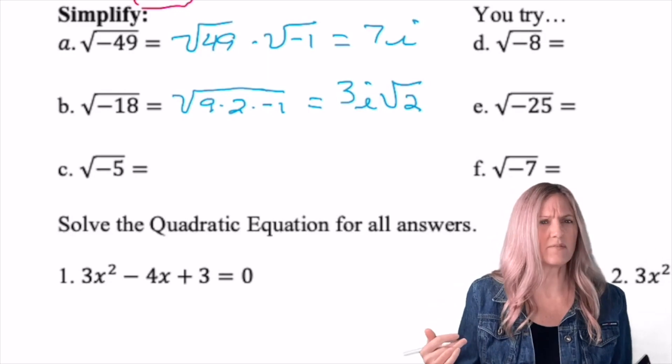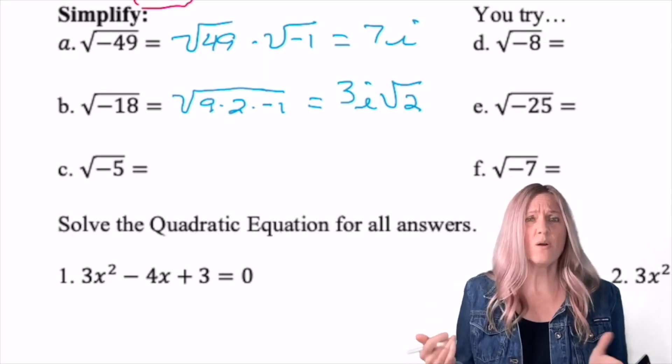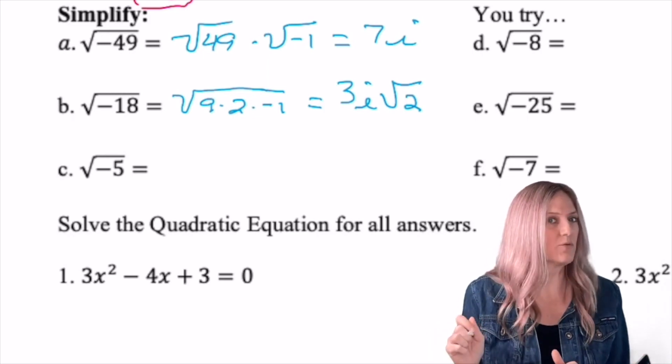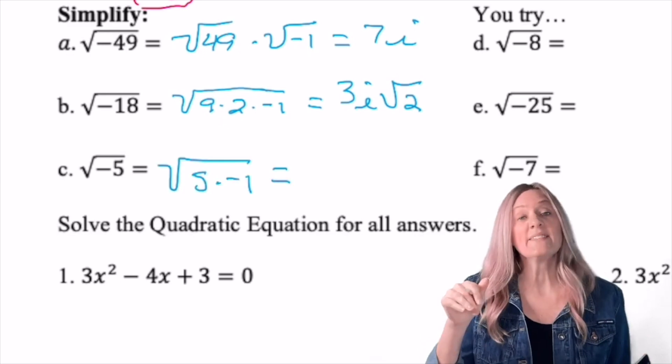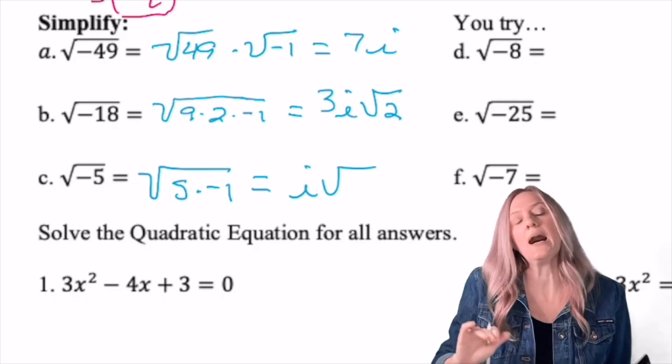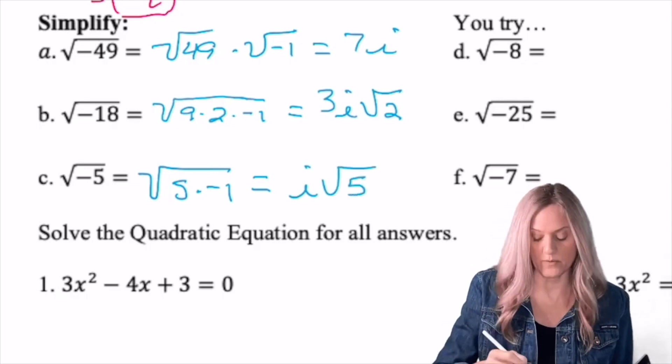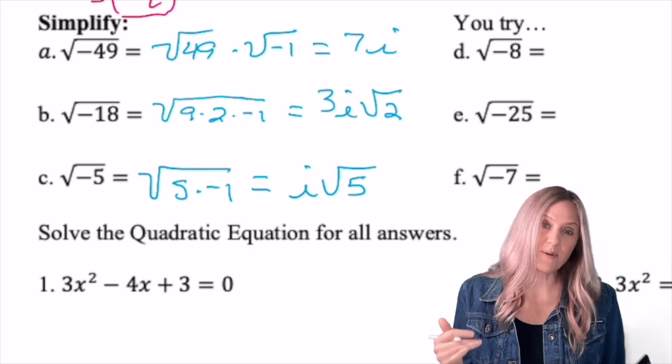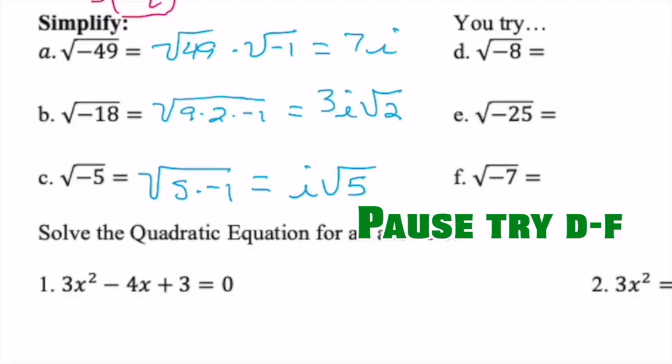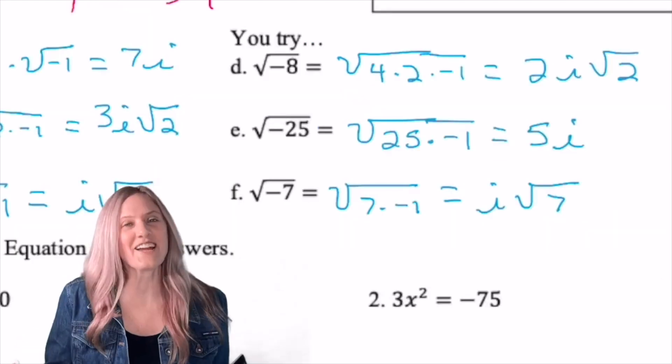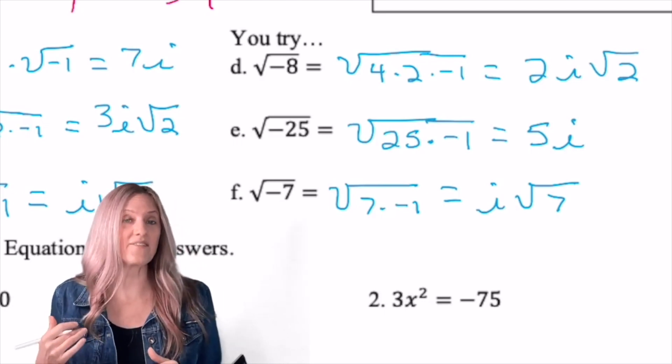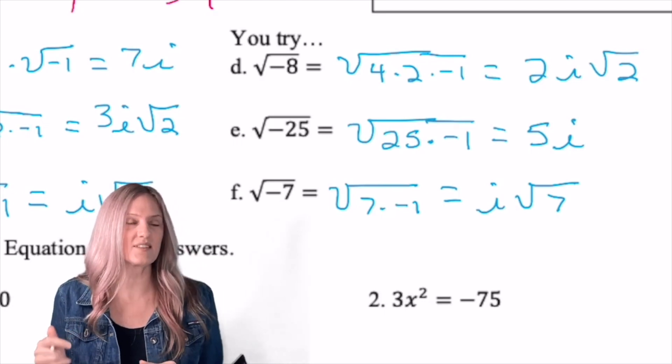Last, take a look at square root of negative five. Five isn't a perfect square. We're just going to have to leave it. But what about that negative one? We can pull it out. Once again, when we write this, put the i in front of the square root so that it doesn't look like it's possibly underneath the square root sign. Next, you try d through f. Come back and check your answers. As you check your answers, just make sure that you have the placement of i proper so that we don't have any confusion about the answer. This is the proper notation.